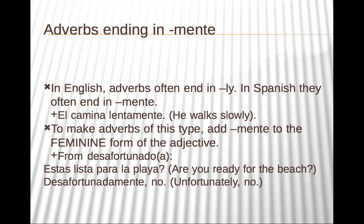This is how you form them: you take the feminine form of the adjective. So lento is slow, rápido is fast — you make it lenta or rápida, and then you add -mente to it. For example, desafortunado is the adjective for 'unfortunate,' you change it to desafortunada and add -mente. So: ¿Estás lista para la playa? — Are you ready for the beach? Desafortunadamente, no — unfortunately, no.